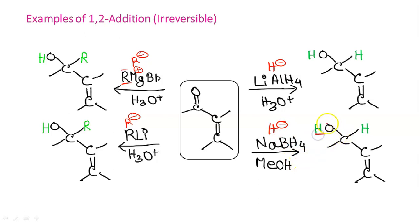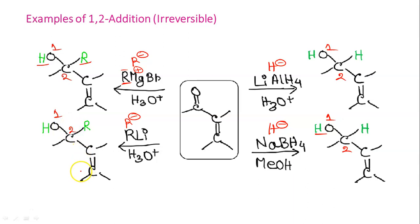Next are examples of 1,2-addition. Here the nucleophiles are R⁻ (from a Grignard reagent) and H⁻ (from metal hydrides such as lithium aluminum hydride or sodium borohydride). In the case of metal hydrides, two hydrogens are added to the C=O group: one goes to oxygen (position 1) and the second hydrogen is added to carbon 2. For the Grignard reagent, R⁻ adds to the carbonyl carbon, and H (from H₃O⁺ workup) completes the addition at positions 1 and 2.